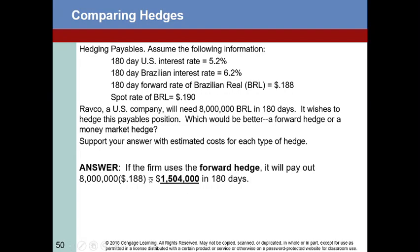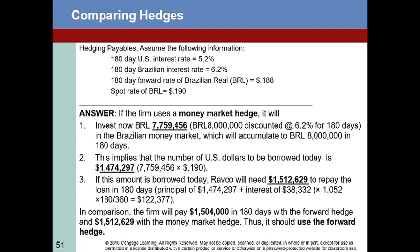Looking at the same information: if the firm uses the forward hedge, it will basically lock in the forward rate by buying Brazilian reals, and it will pay $1,504,000 in 180 days. That is, it locks that in — when the time comes, it will cost $1,504,000 for those 8 million Brazilian reals. So we have a straightforward way to determine the dollar cost of the forward hedge.